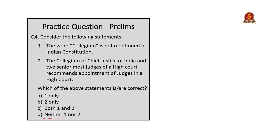The fourth question is about the collegium, asking for correct statements. Statement 1 — the word 'collegium' is not mentioned in the Indian Constitution — is correct, as it is a concept brought in by the Supreme Court. Statement 2 — the collegium of the Chief Justice of India and two senior-most judges of a High Court recommends appointment of judges in a High Court — is false, because the collegium consists of the Chief Justice of India and the two senior-most judges of the Supreme Court, who form the collegium that appoints High Court judges. The correct answer is A: 1 only.